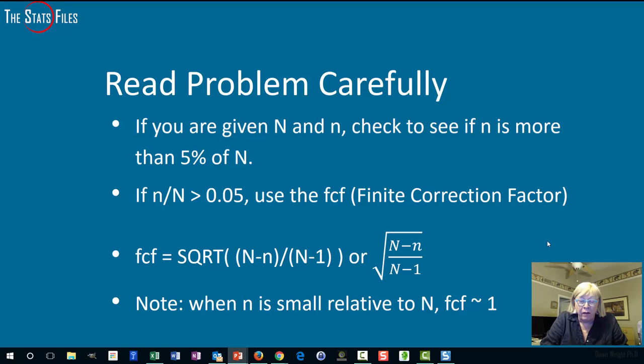If n divided by large N is greater than 5% (0.05), then you need to use the finite correction factor as I labeled here, the FCF. The FCF is really pretty straightforward: it's just the square root of (population N minus sample n) divided by (population N minus one). You should note just by looking at it that if n is very small relative to big N, then the finite correction factor approaches one and therefore the adjustment is insignificant.